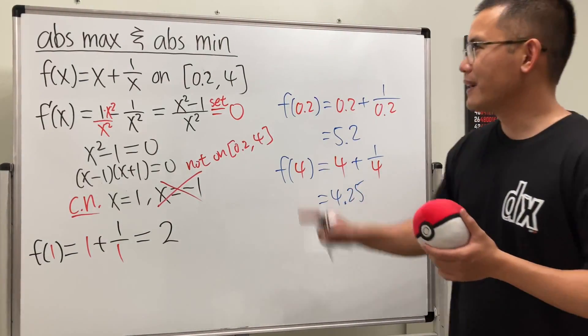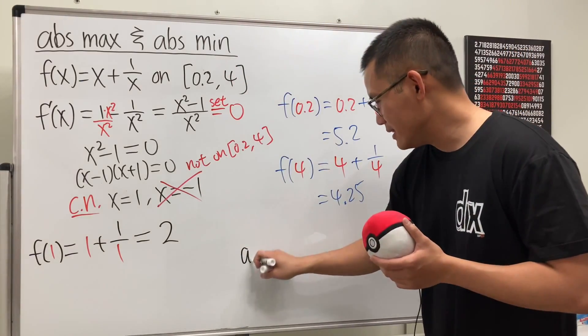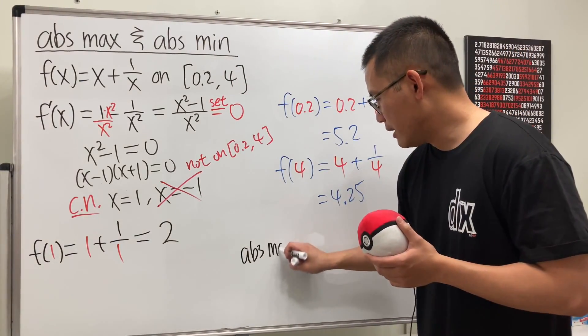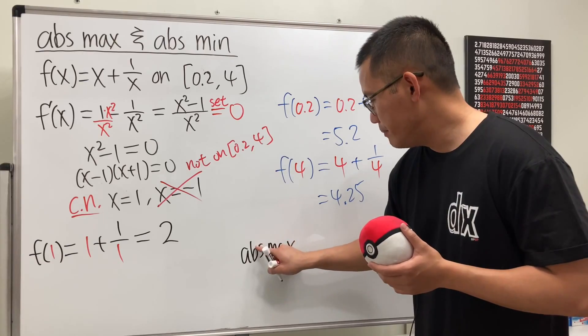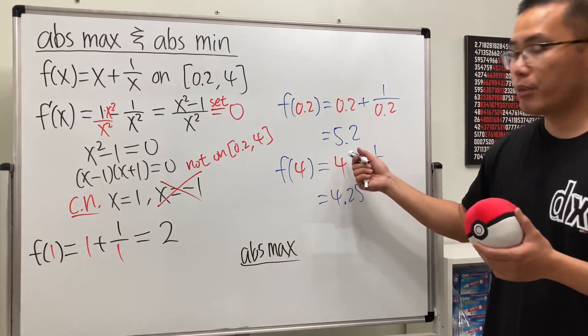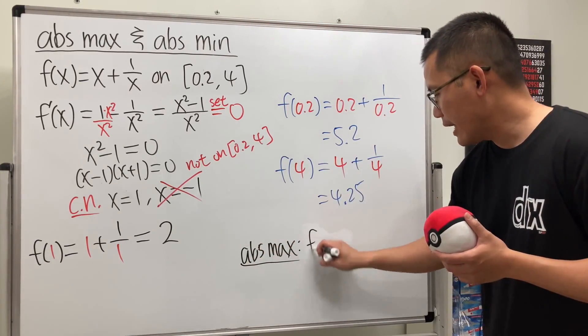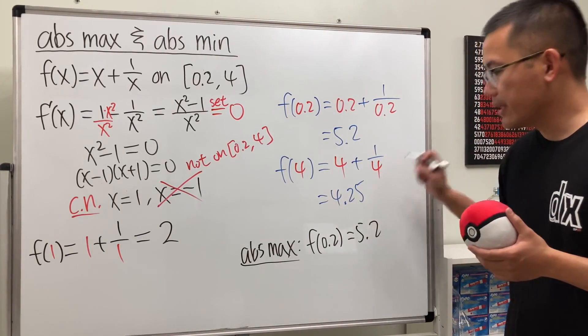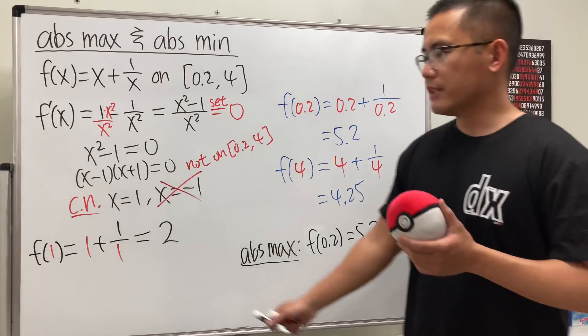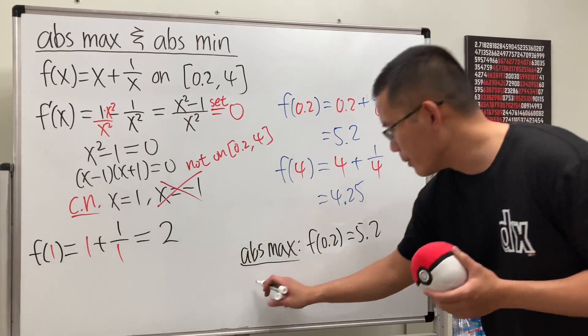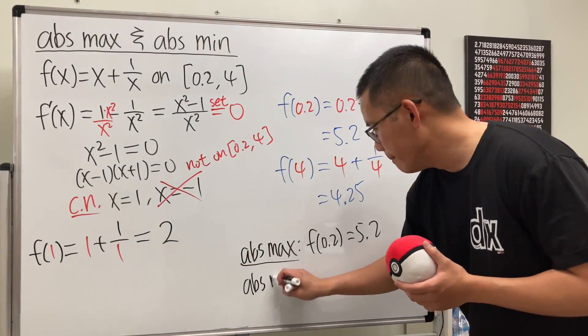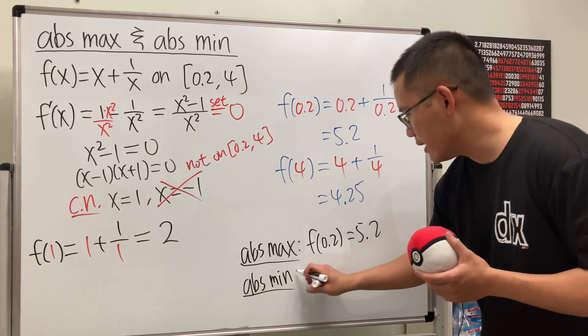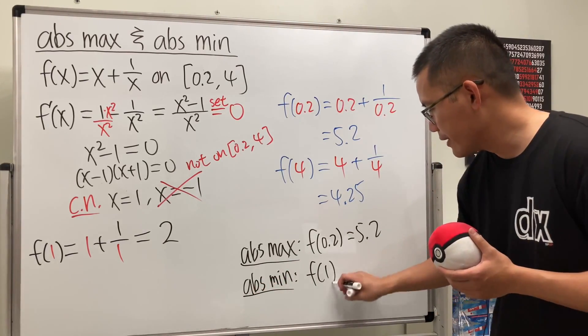Now we are going to find the absolute max. Among all these values, the biggest is 5.2, so we have f(0.2) equals 5.2. And among all these, the smallest one is 2, so that will be the absolute minimum. And that's f(1) equals 2.